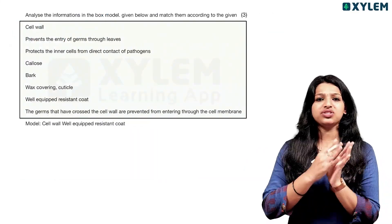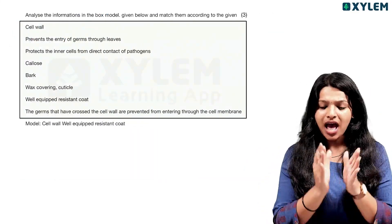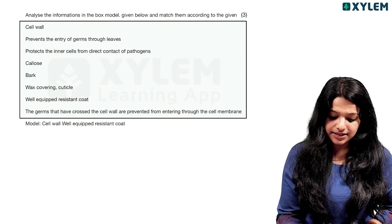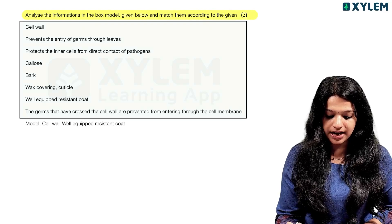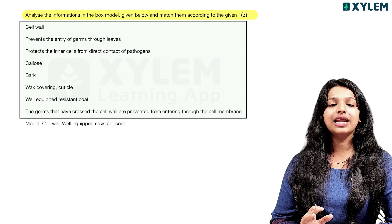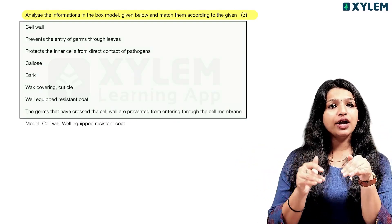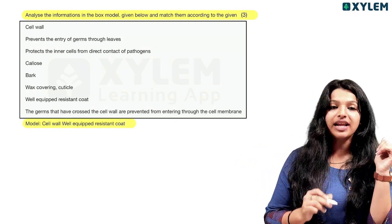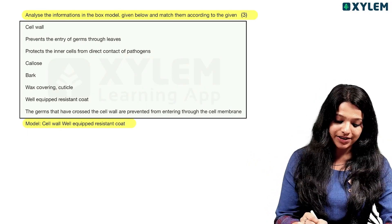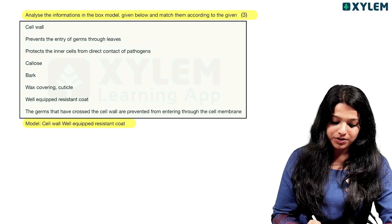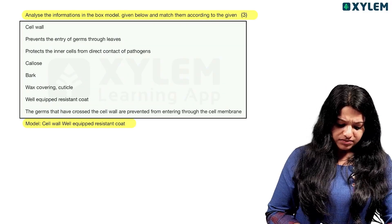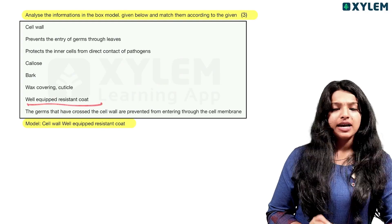Find the information in the box model given below and match them according to what is given. If you have a box within a box, you have many things. You have a model and you have to use this model. Then we go to the model — this is the cell wall with a well-equipped resistant coat.